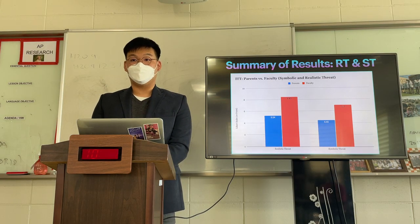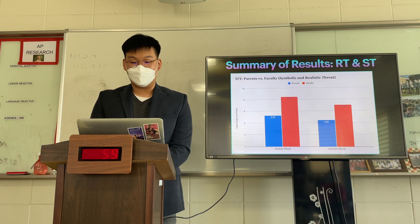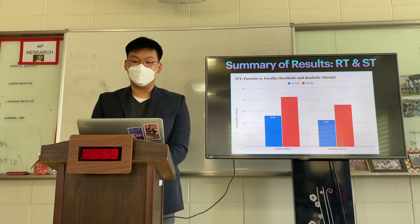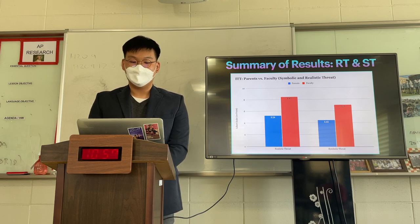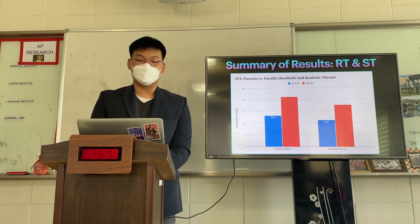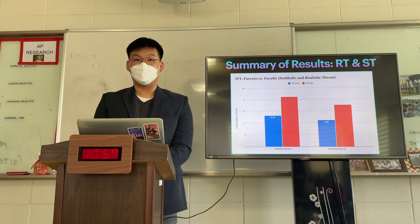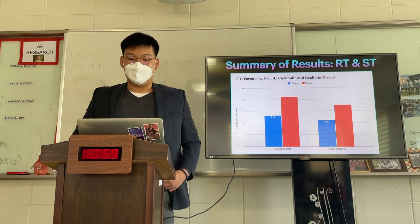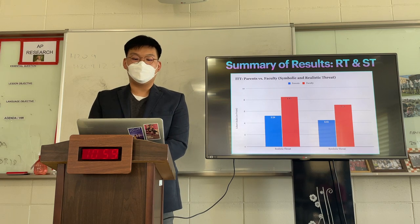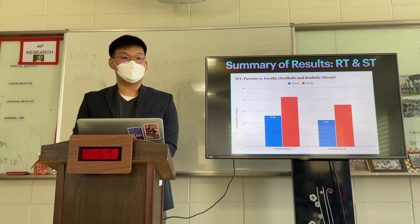Here are the summary results for realistic and symbolic threats. Blue represents parents and red represents faculty. There is a consistent three-point Likert scale difference between the survey averages. A lower value indicates a more negative attitude, while a higher value indicates a more positive attitude. Faculty maintained a consistent realistic threat average of 8.47 while parents averaged 5.24. For symbolic threat, parents averaged 4.43 and faculty averaged 7.01.